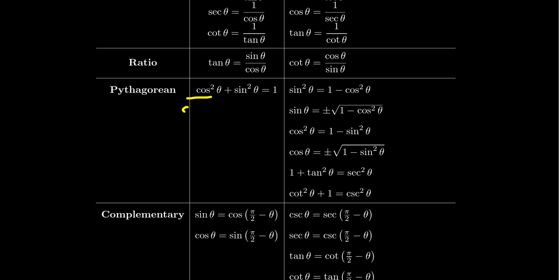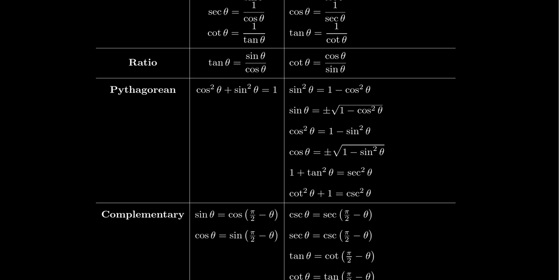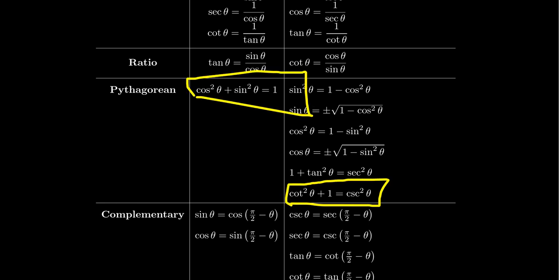Similarly, if you divide the mom identity by sin² θ: cos²/sin² = cot² θ (since cos/sin = cot), sin²/sin² = 1, and 1/sin² = csc² θ. So you get cot² θ + 1 = csc² θ. You don't necessarily have to memorize this identity — if you remember the mother identity, you can re-derive it by dividing by cos² θ or sin² θ as needed.